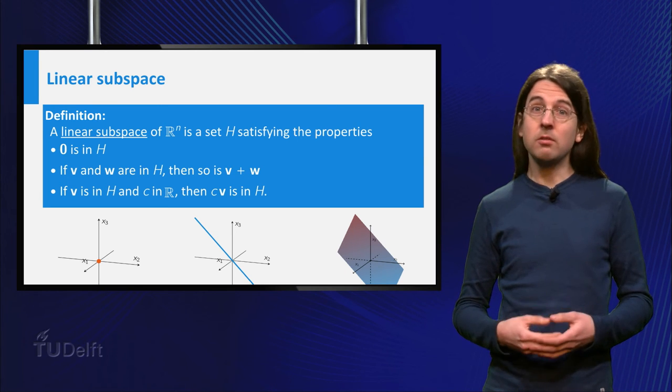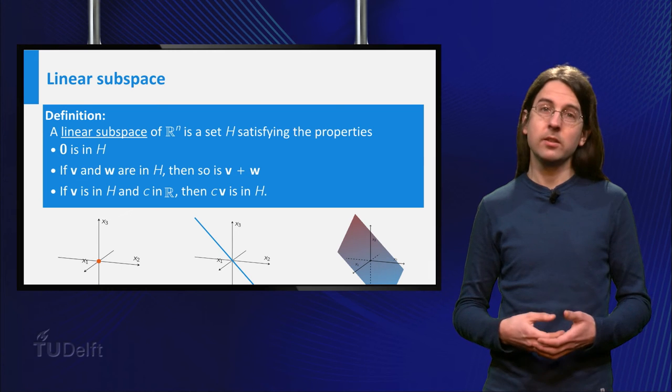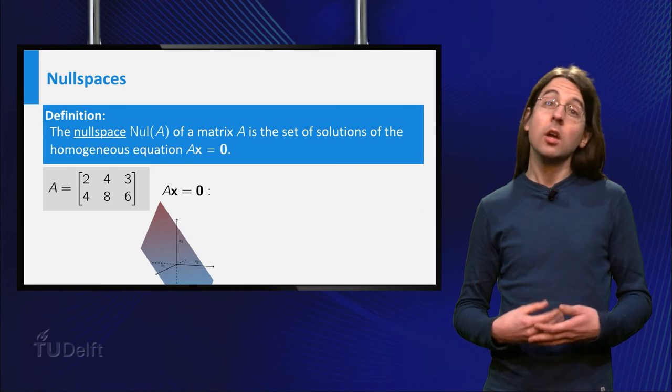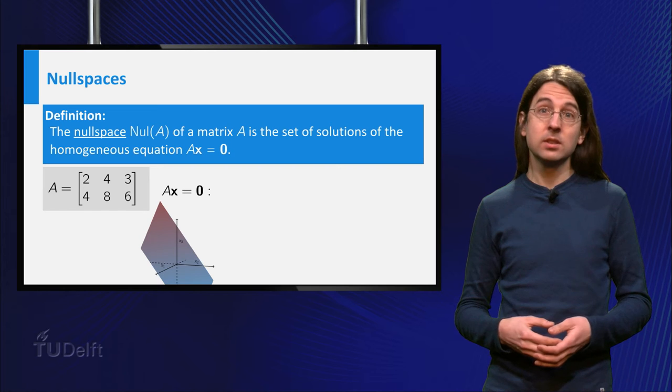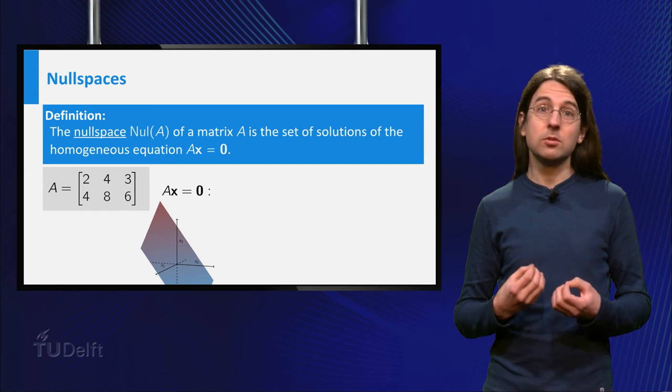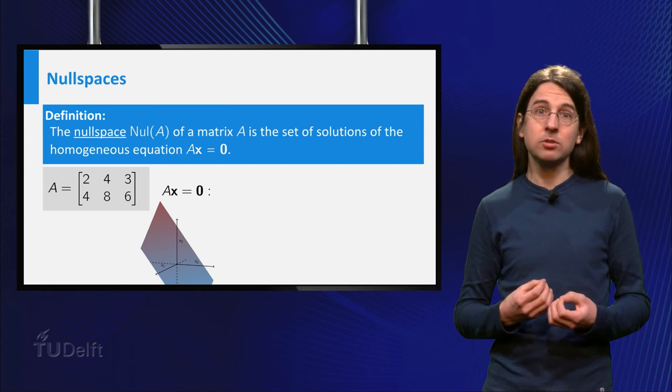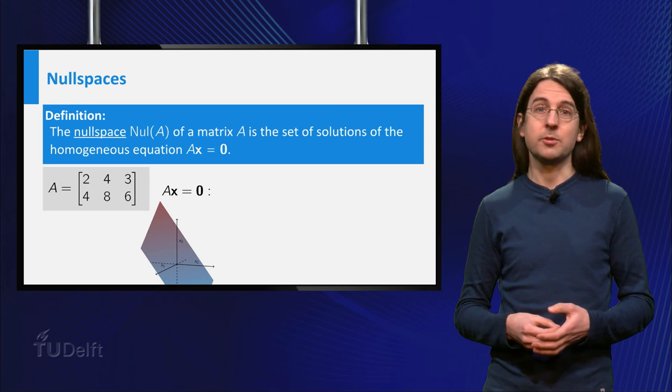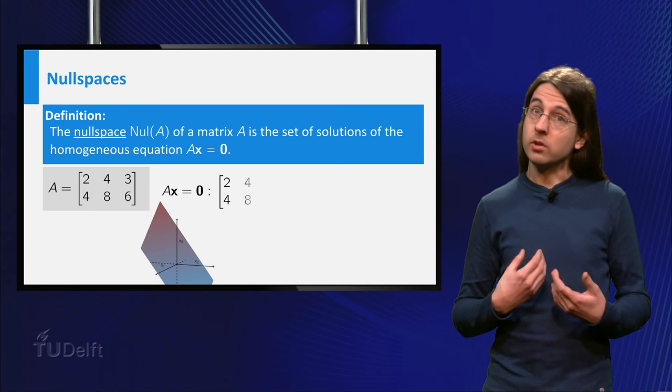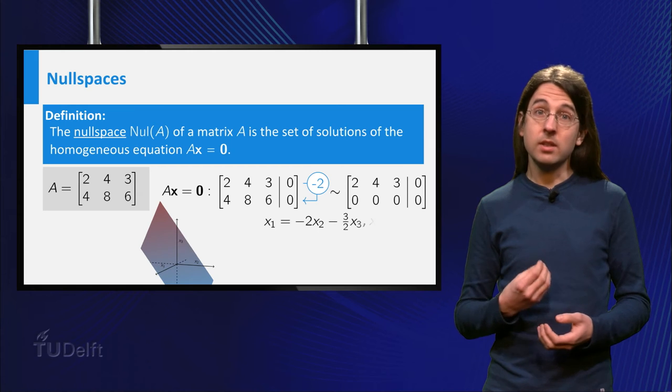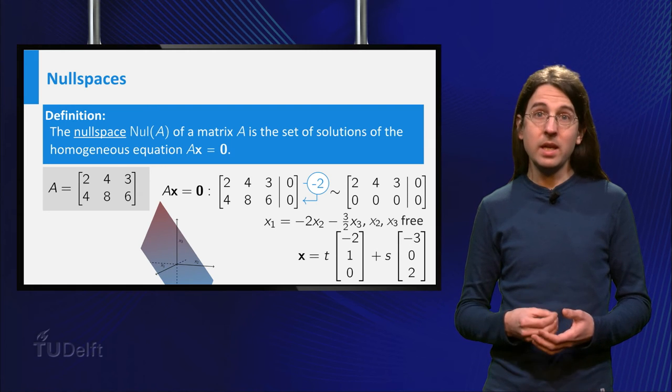Linear subspaces arise in several different ways in linear algebra. You have already seen that the null space of a matrix, the set of solutions to the equation A times x equals zero, is a linear subspace. For the given matrix A, you can easily calculate that it is a plane through the origin.